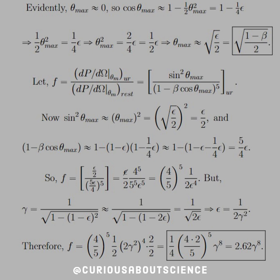And so we solve this for theta max with respect to what epsilon is. And when we do this, we get theta max is approximately the square root of epsilon over 2, which if we put back in the substitution, we get 1 minus beta over 2. That's our theta max.